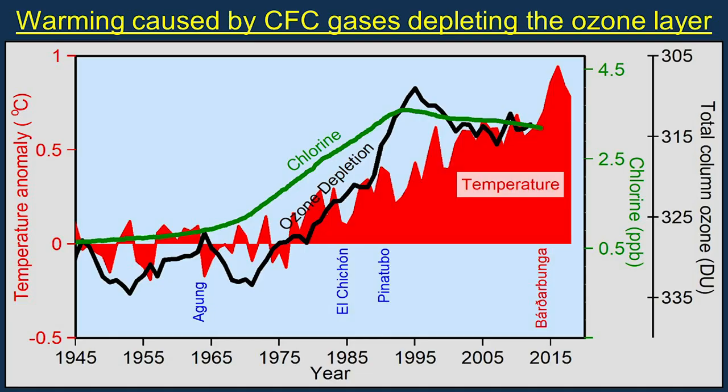Many CFCs have atmospheric lifetimes of more than 50 years. This graph summarizes the increased production of CFCs shown in green, related to the increases in ozone depletion shown in black, and increases in temperature shown in red.